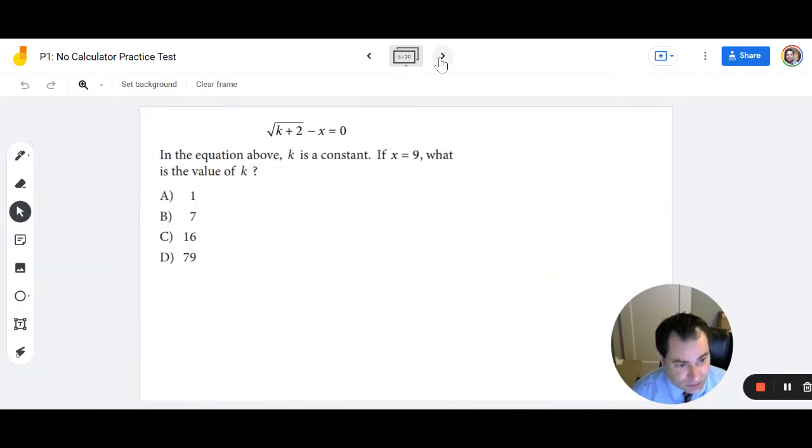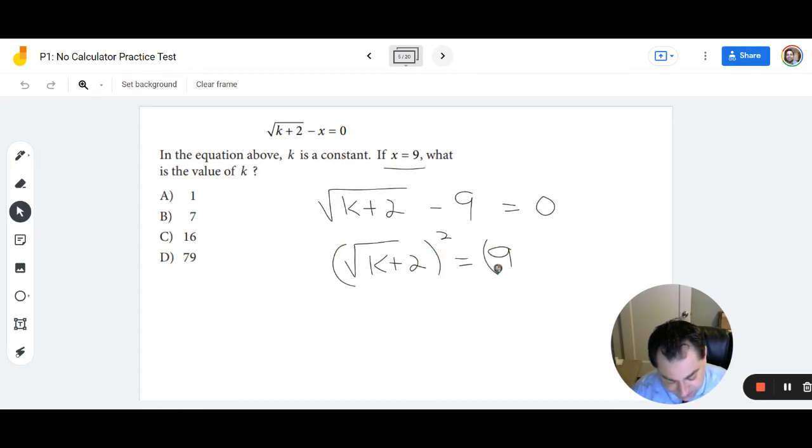Number 5. In this problem right here, we have x equals 9. So we're going to start by plugging in 9 into the problem. So we have the square root of k plus 2 minus 9 equals 0. I'm going to add 9 to both sides, so we get the square root of k plus 2 equals 9. I'm going to square both sides, and I get k plus 2 is equal to 81. Subtract 2 from both sides, and I get k is equal to 79, which is D.